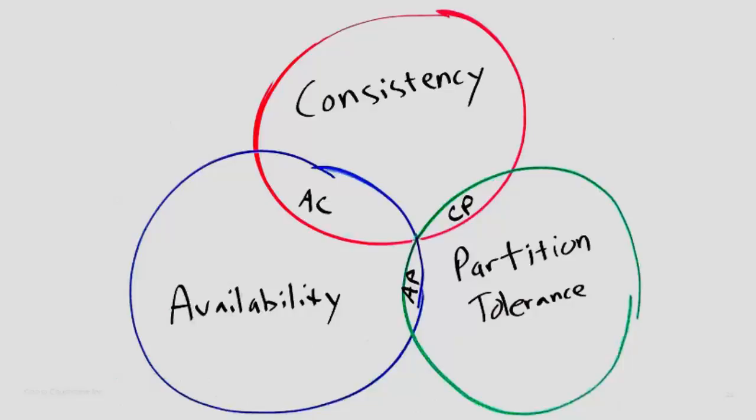So when someone says 'oh, it's an AP database, I don't want to use it because it's never consistent,' well, that's just a really severe oversimplification. So any questions about the CAP Theorem? I'm not a super academic expert on it, but if you have questions now for clarification, it would be a good time.